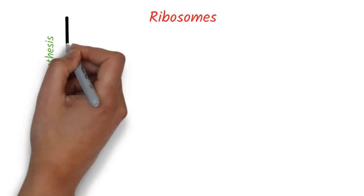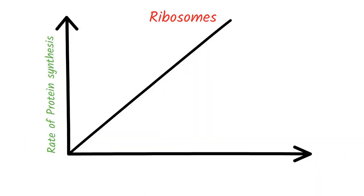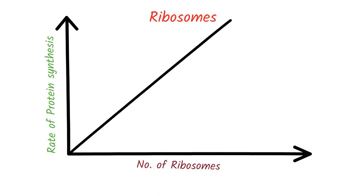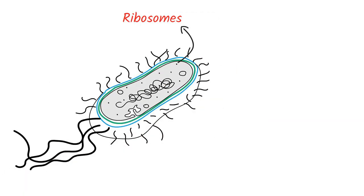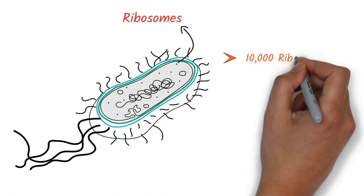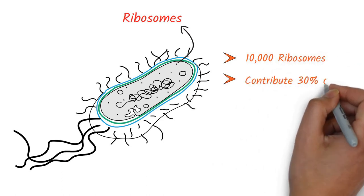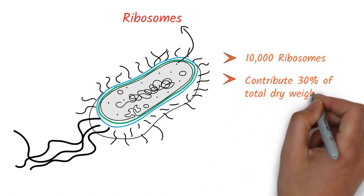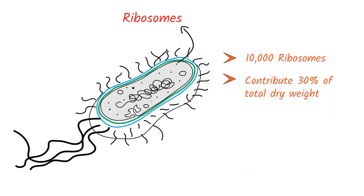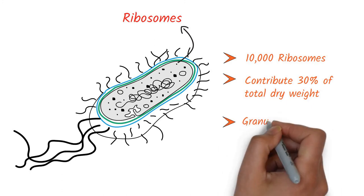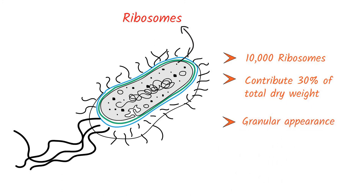The rate of protein synthesis depends on the number of ribosomes. The bacterial cell contains about 10,000 ribosomes, and they contribute 30% of the total dry weight of the cell. A greater number of ribosomes provides a granular appearance to the cytoplasm.